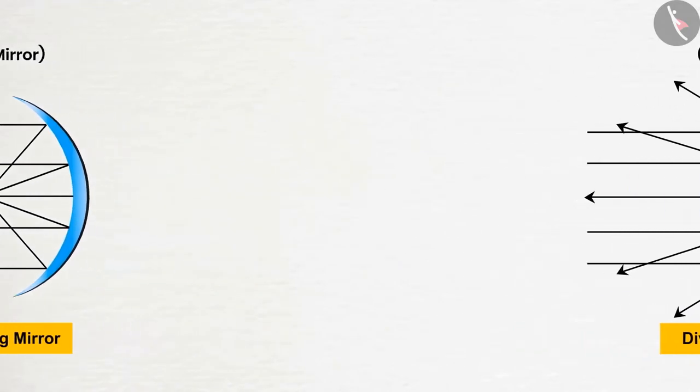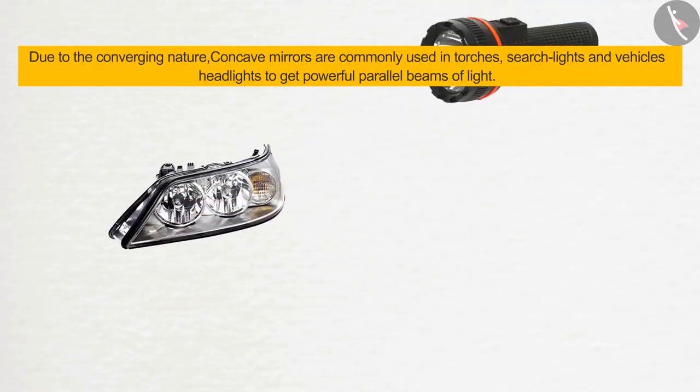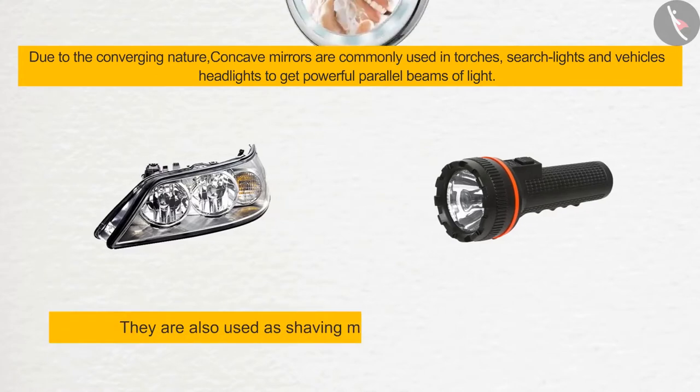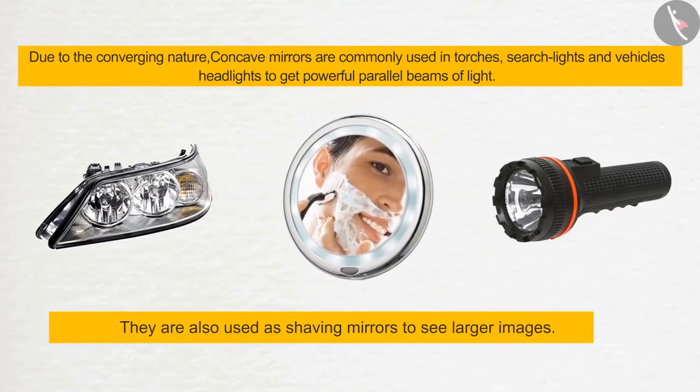Due to the converging nature, concave mirrors are commonly used in torches, searchlights, and vehicle headlights to get powerful parallel beams of light. They are also used as shaving mirrors to see larger images.